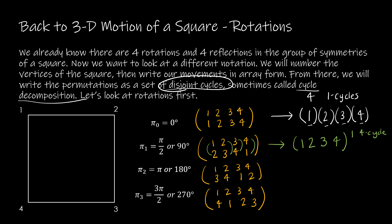For 180 degrees: 1 maps to 3, and 3 maps back to 1, so I close that. Then 2 maps to 4, and 4 maps back to 2 — giving two two-cycles. For 270 degrees: 1 maps to 4, 4 maps to 3, 3 maps to 2, 2 maps back to 1 — so I close it, giving one four-cycle.